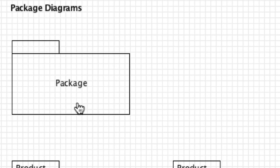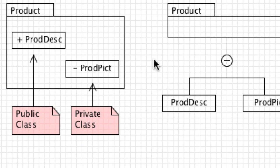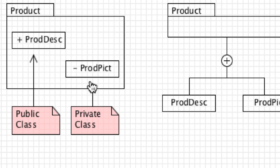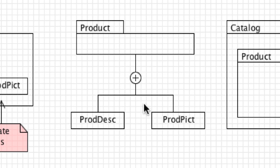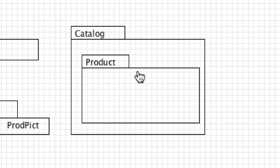The symbol for a package is a simple folder. You can put the package name inside the folder or on the tab outside. The contents of the package can be drawn directly inside — a class with a plus sign is public, and a class with a minus sign is private. Classes can also be listed as external to the package, and a package can be contained inside another package, such as a 'catalog' package containing a 'product' package.